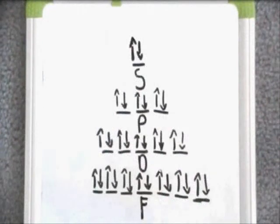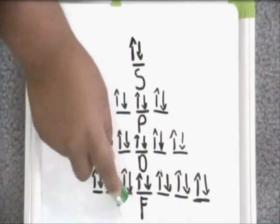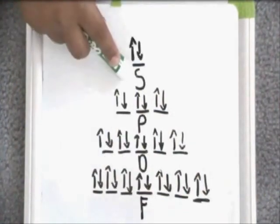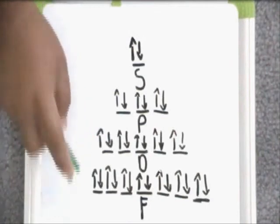To start off I will talk about electron configuration. Electron configuration is the arrangement of electrons in an atom. There are four sublevels which these electrons go into. These are S, P, D, and F. The S sublevel has one orbital while P has 3, D has 5, and F has 7.